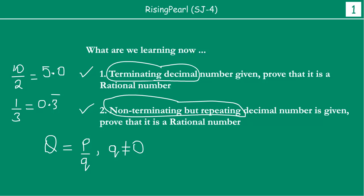Aaj ka savaal jawaab presentation mein, hum dekhenge ki agar haapko ek terminating decimal number di jaati hai, so hum kaise karke proof kar sakte hai ki that is a rational number. And secondly, agar haapko ek non-terminating but repeating decimal number di jaati hai, how do we prove that that is a rational number.